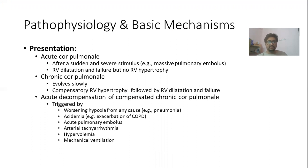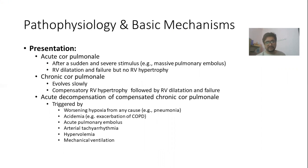In cases of chronic cor pulmonale, it develops very slowly and there will be compensatory right ventricular hypertrophy followed by right ventricular dilatation and failure. Acute decompensation of chronic cor pulmonale is usually triggered by worsening hypoxia from any cause such as pneumonia, acidemia, acute pulmonary embolus, atrial tachyarrhythmias, hypervolemia, or mechanical ventilation.